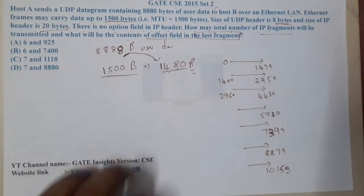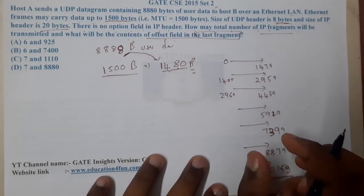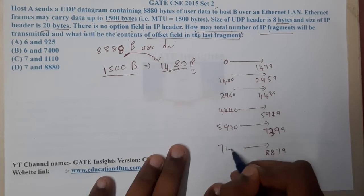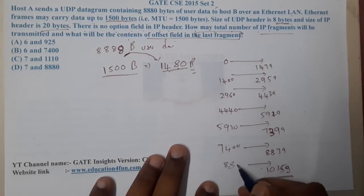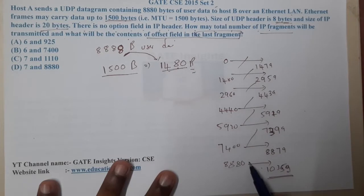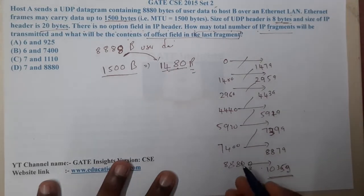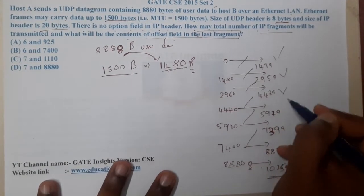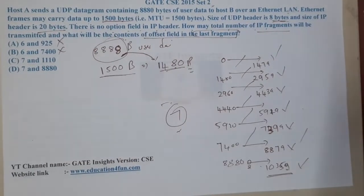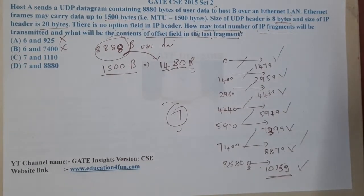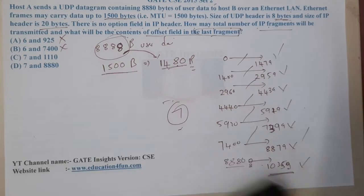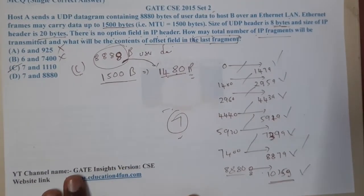Our goal is to send 8888 bytes. Fragment 7 starts at 8880, carrying only the remaining 8 bytes. So we need fragments 1 through 7 — a total of 7 fragments. This rules out options A and B immediately. The last fragment starts at byte 8880.